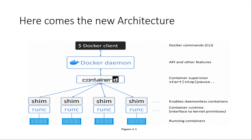The next component is containerd. The job of containerd is to manage the container lifecycle — start, stop, pause, remove, and the whole lifecycle of the container. Containerd can also pull and push images, but its primary objective is to manage and supervise containers. The shim is responsible for managing the input and output streams and communicating with containerd or the Docker Daemon regarding the status of the container.